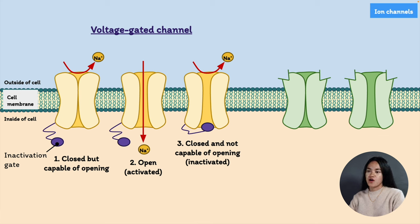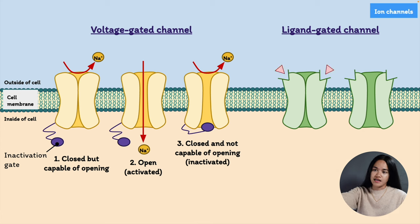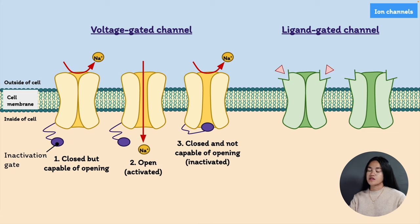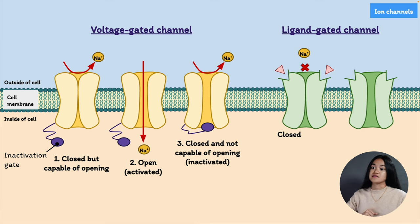The other type are ligand-gated channels, also called ionotropic receptors — these are large protein complexes. These are ion channels that open directly in response to ligand binding, regulated by the binding of chemical ligands. A great example are neurotransmitters involved in synaptic transmission. Once a neurotransmitter binds, this causes the channel to change shape and open up, allowing ions from the extracellular fluid to enter.